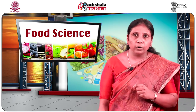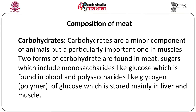Moving on to the carbohydrate content of meat: carbohydrates are only a minor component of animals but are particularly important. Carbohydrates in the muscle of the animal are found in two forms. One is sugars, including monosaccharides like glucose, which is found circulating in the blood of the animal. The other form is glycogen, a polysaccharide or polymer of glucose, mainly stored in the liver and muscles.